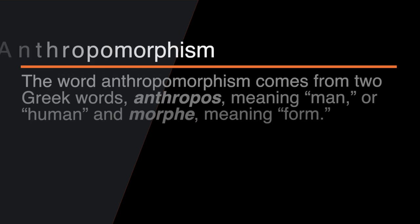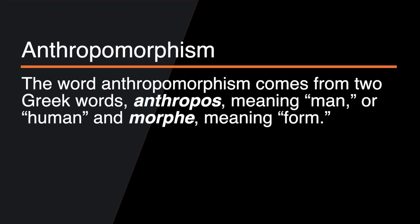The word anthropomorphism comes from two Greek words: anthropos, which means man or human, and morphe, which means form. In theological terms, and more specifically in Judaism and Christianity, anthropomorphism is the process of assigning human features and characteristics to God, such as arms, hands, feet, eyes, and so forth.